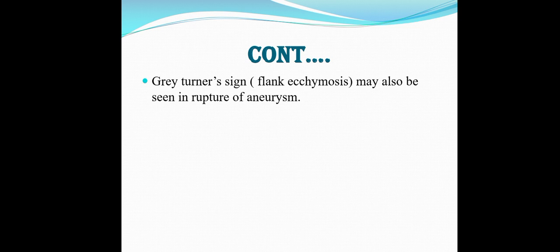The Grey Turner sign, also called flank ecchymosis, may also be seen in rupture of an aneurysm. An aneurysm is a bulging, balloon-like area in the wall of a blood vessel, resulting in an abnormal widening or ballooning greater than 50% of the vessel's normal diameter. An aneurysm may occur in any blood vessel, but it is most often seen in an artery rather than a vein.